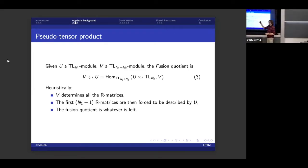Here, V, it's a module for TL_{N_1+N_2}. So it determines all the R matrices. And then what I'm going to do, I'm going to grab the first N_1 minus 1 R matrices. And I'm going to force them to be described by U. And every state that I cannot do this on, I just throw them out. And then the fusion quotient is whatever is left.